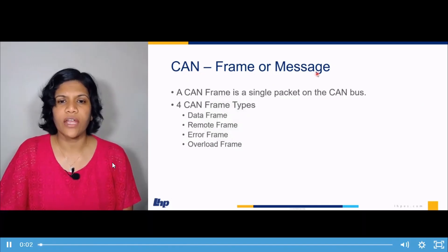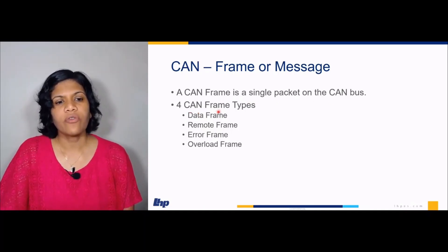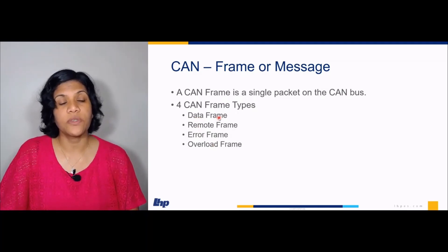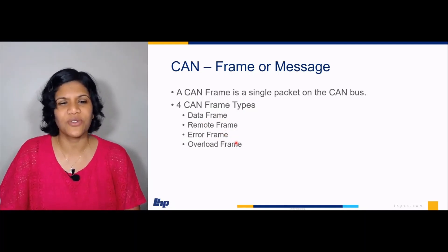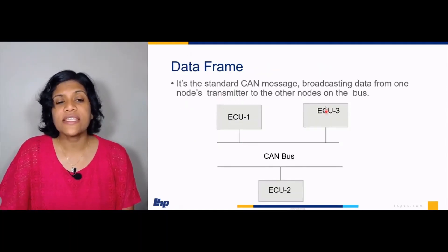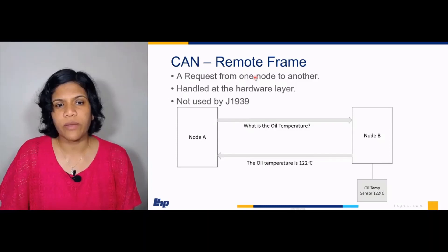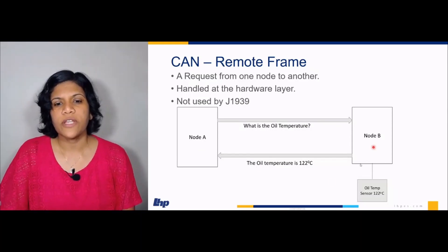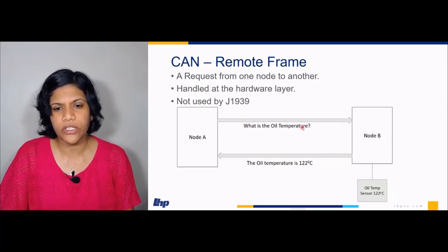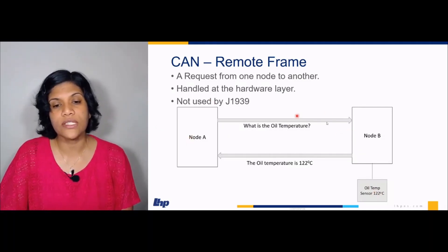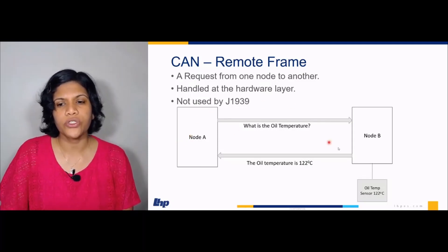Next is the CAN frame, or CAN message. A CAN frame is a single packet on the CAN bus. There are four types of CAN frames: data frame, remote frame, error frame, and overload frame. Data frame is the standard CAN message — when one node transmits its message through the CAN bus, all ECUs receive it. Remote frame is a request from one node to another. For example, node A asks node B what is the oil temperature, because node B is connected to the oil temperature sensor. It is a request, not data.